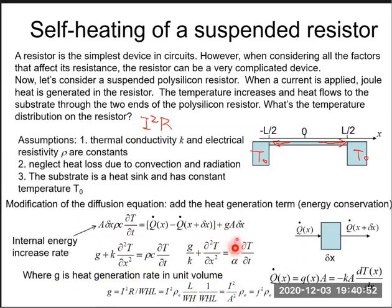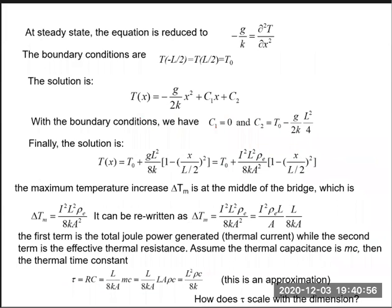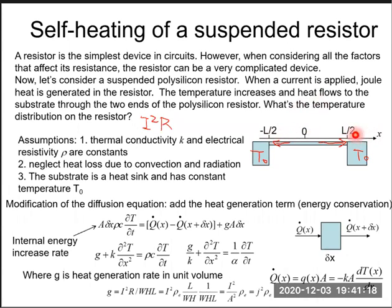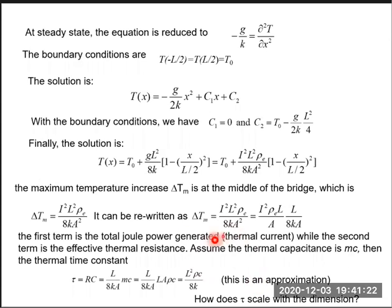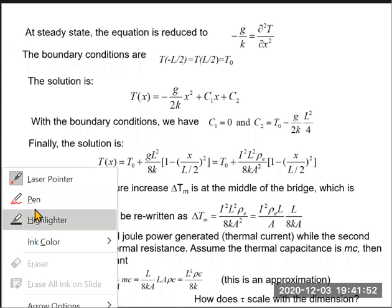We can solve this differential equation — I will skip the details. The steady-state solution gives T(X) as a function of X only. T(X) equals T0 — the substrate temperature — plus I squared times rho_E times L squared divided by 8KA squared, times the quantity one minus (X divided by L/2) squared. This is a parabolic function of X.